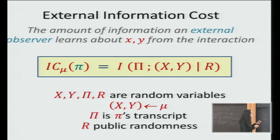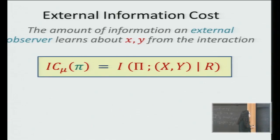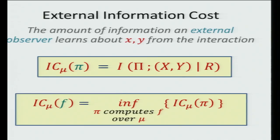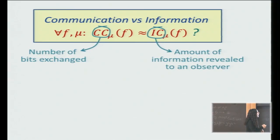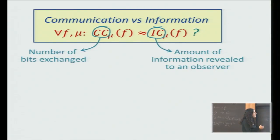This is supposed to capture the intuition of what a third party who doesn't know X and Y learns from the interaction — from watching the set of messages. We can define the external information cost of the function as we've done before: just take the information cost of the best protocol that computes F over our distribution. So we have a way of measuring the communication of the protocol and the information of a function, and we can ask what is the minimum number of bits that the players should exchange to compute F, and what is the minimum amount of information that the players should reveal to an external observer in order to compute F.